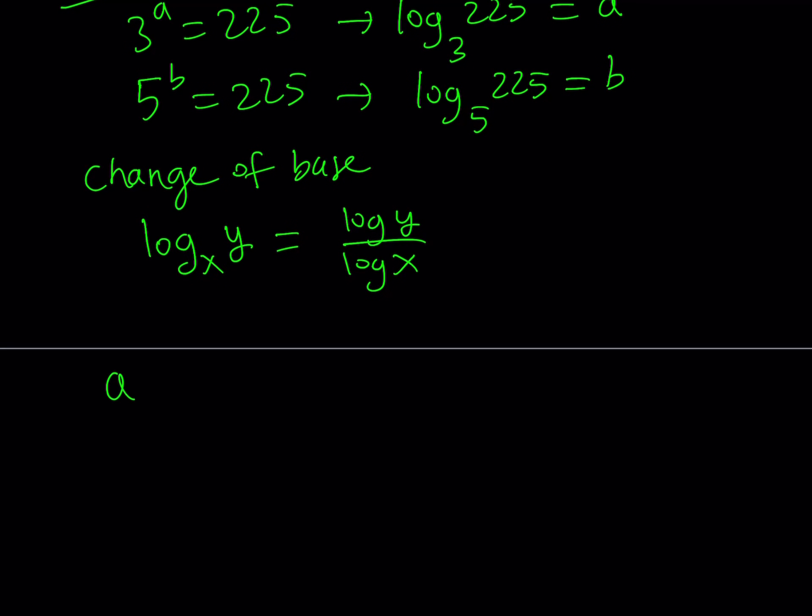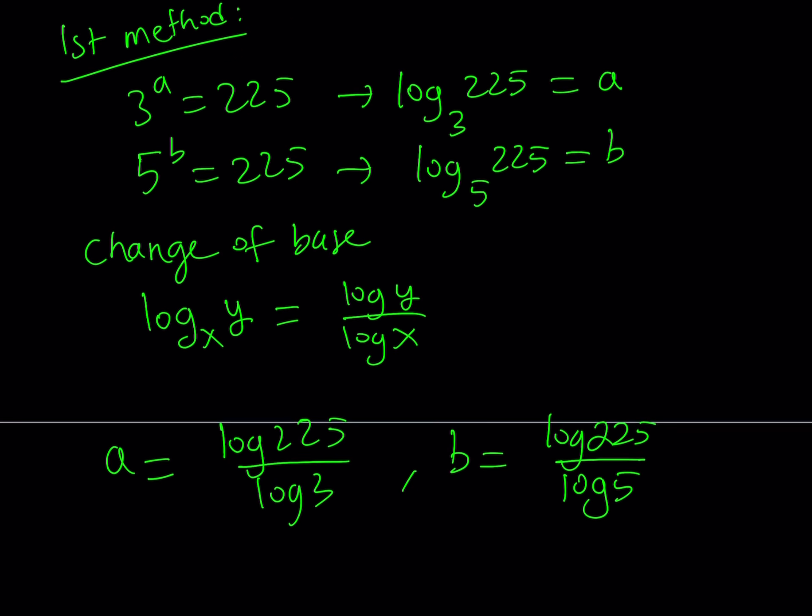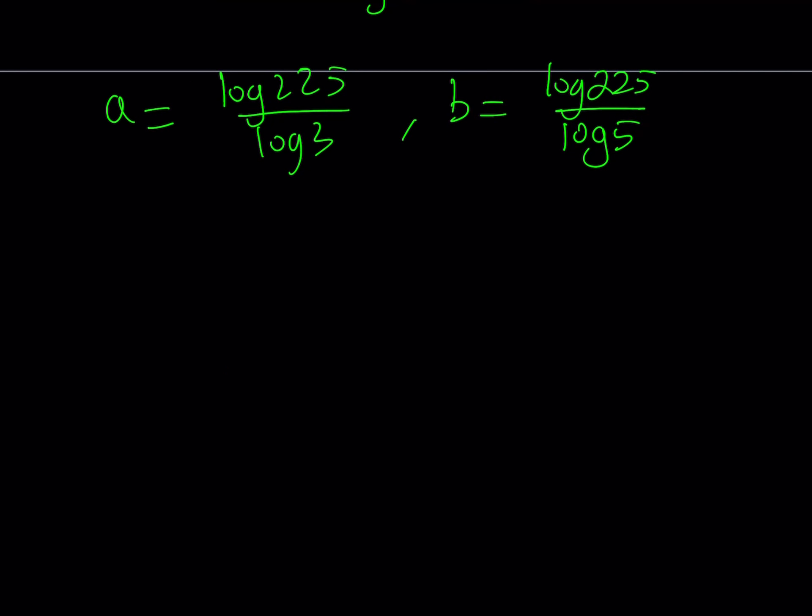So I'm going to take this expression and write a as log 225 over log 3, and I'm going to write b as log 225 over log 5. Here I use base 10 because it's convenient. Now I'm going to go ahead and substitute all of this into my expression, which is ab over a plus b.